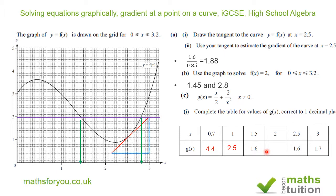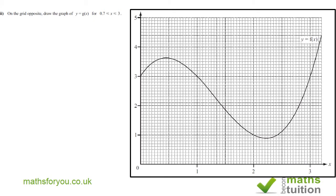When x = 1.5... and there you have it. For part three, it says on the grid opposite, draw the graph of y = g(x) for 0.7 ≤ x ≤ 3. That's the grid there. What I've done here is that's my graph of y = f(x). Now I'm going to draw the graph of y = g(x) based on the table we saw.